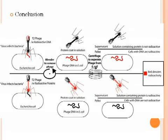To summarize, the Hershey-Chase experiment demonstrated that DNA is the transforming principle and the hereditary material by showing that phage DNA moves into the bacterial cell during the course of infection, and that the ability of phage to replicate is dependent on the transfer of DNA into the bacterial cell. Protein plays little role in the process of phage replication, but is important for phage DNA to enter into the bacterial cell.